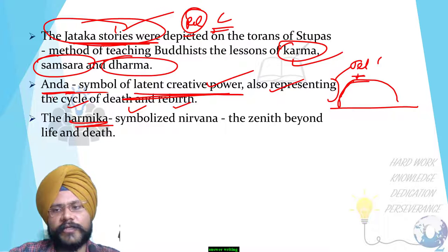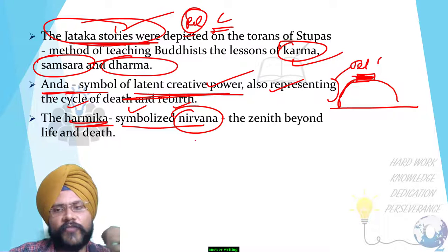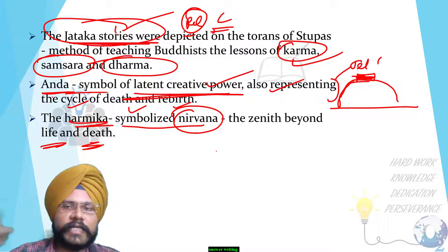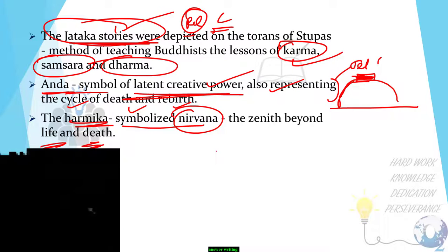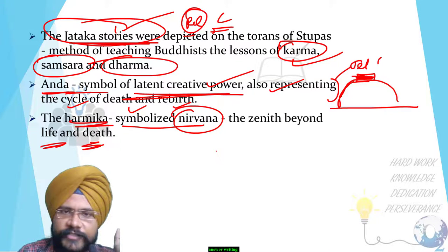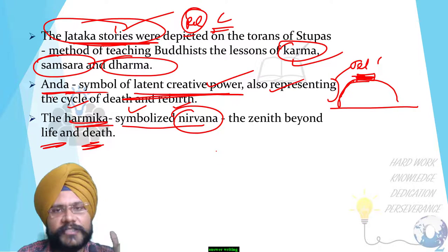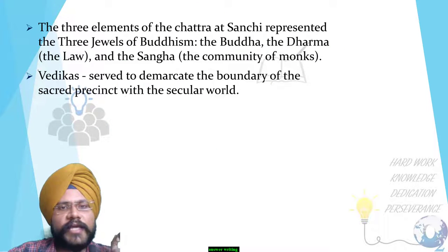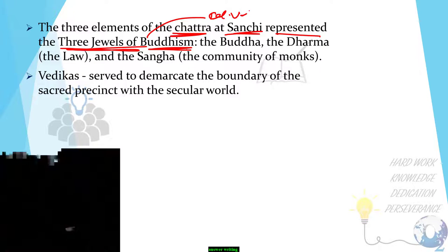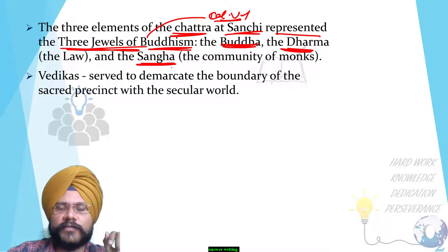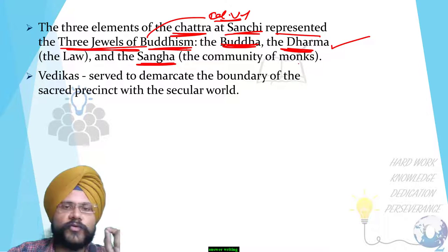The hermika, which is on top of the anda, symbolizes nirvana — the stage beyond life and death, where you are free from the cycle of life and death. So hermika represents nirvana, which is again a cultural and religious symbol. Then the three elements of the shatras at Sanchi represent the three jewels of Buddhism — Buddha, Dharma, and Sangha — which is again a religious value.